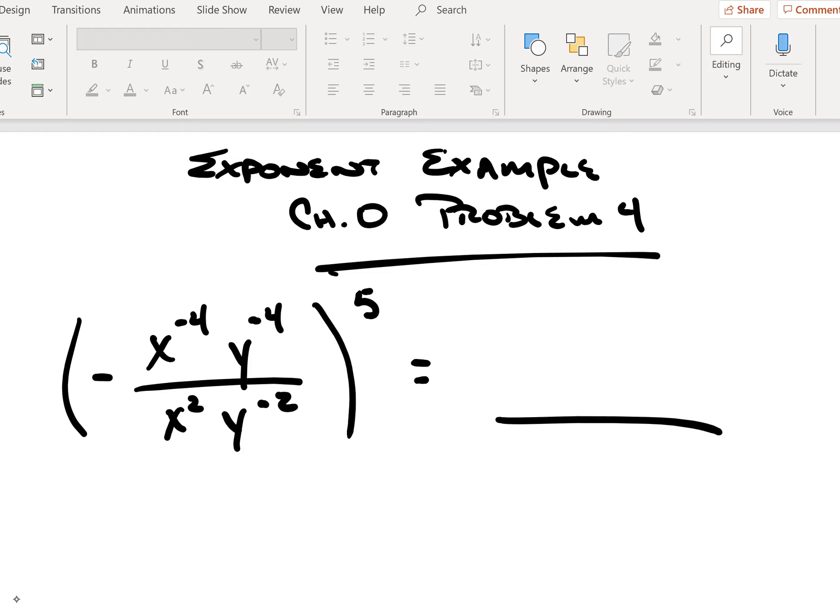Problem four is stated as the base negative x to the minus four, y to the minus four in the numerator, x squared, y to the minus two in the denominator, the entire quantity to the fifth power.